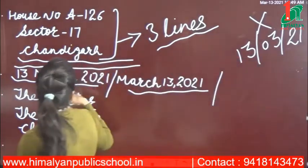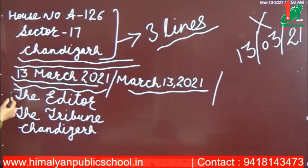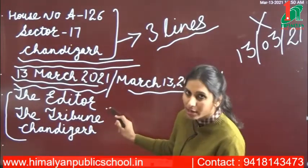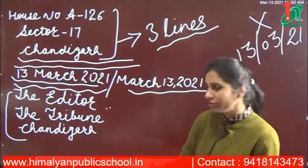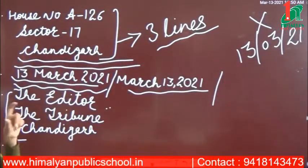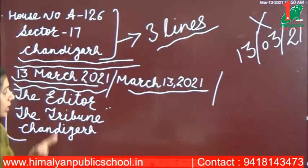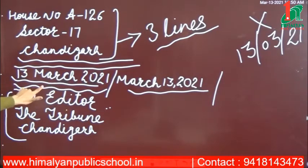So your letter has: sender's address, leave a line, date, leave a line, then receiver's address. For example, if I am writing to the editor of Tribune newspaper, Chandigarh, that is the receiver. These three steps remain the same for every formal letter — sender's address, leave a line, write the date, leave a line, then receiver's address. Same to same for every formal letter.